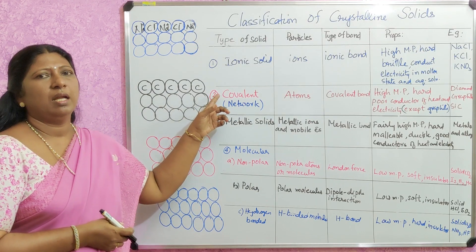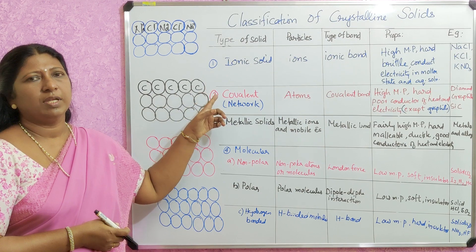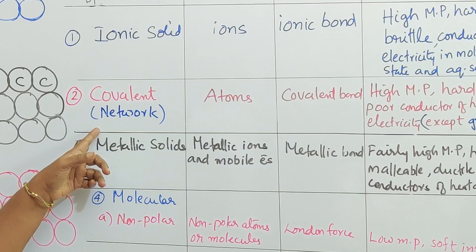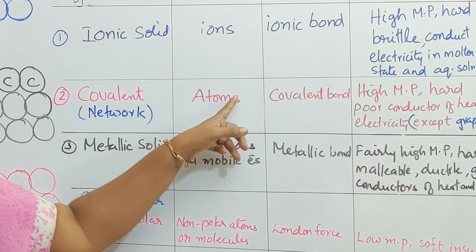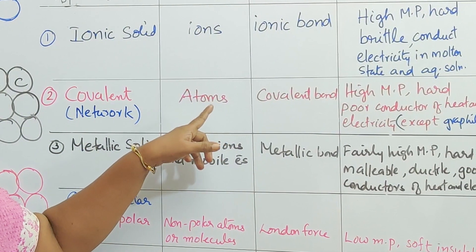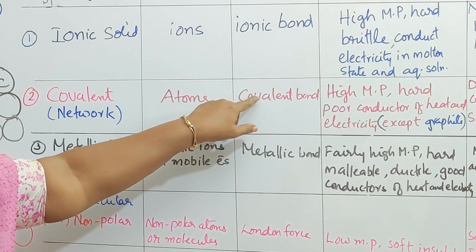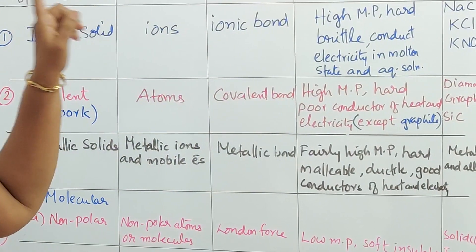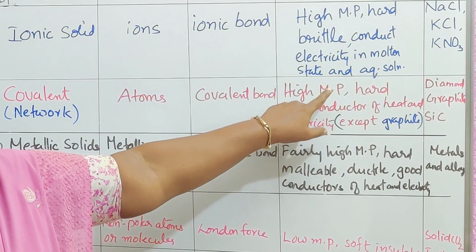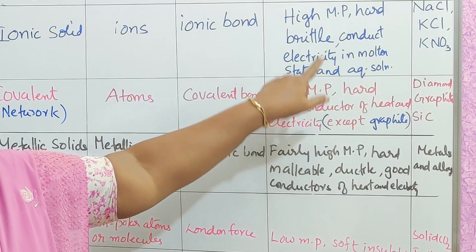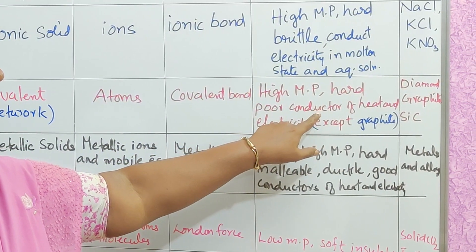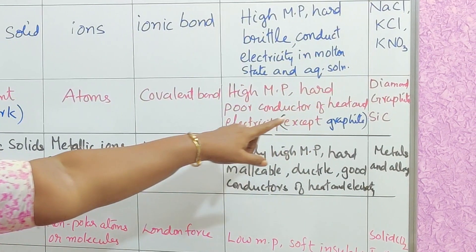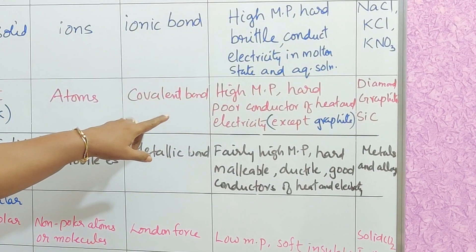The second classification is called covalent or network solid. The constituent particles are atoms, and the force of attraction is called covalent bond. Properties: they have high melting point, are very hard, and are poor conductors of heat and electricity. Examples: diamond, graphite, silicon carbide, silicon dioxide, etc.